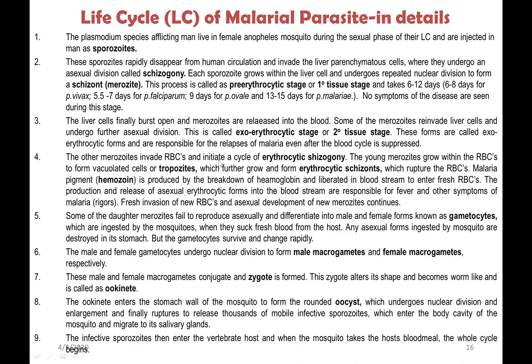Other merozoites invade RBCs and initiate a cycle of erythrocytic schizogony. The young merozoites grow within RBCs to form trophozoites, which mature into erythrocytic schizonts and then rupture the RBCs. The malarial pigment hemozoin is produced by breakdown of hemoglobin and is liberated into the bloodstream. The production and release of asexual erythrocytic forms are responsible for fever and other symptoms of malaria — mainly the rigors and chills. Fresh invasion of new RBCs keeps continuing until this stage is attacked by drugs.